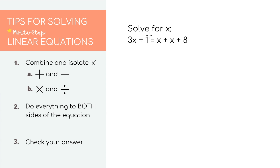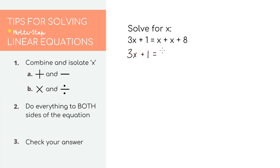Next one, we have 3x plus 1 equals x plus x plus 8. These equations are getting longer and longer, but let's use our tips to simplify. The first thing we want to do is combine like values. You'll notice we already have x's on the right side of the equal sign, so we can combine those first. x plus x equals 2x. So when we combine like values, the equation looks like 3x plus 1 equals 2x plus 8.